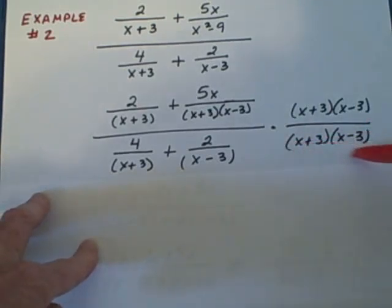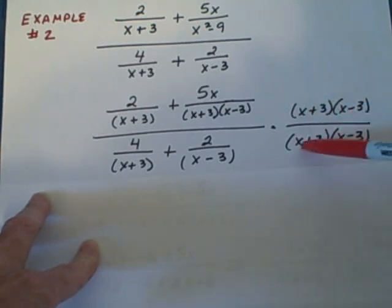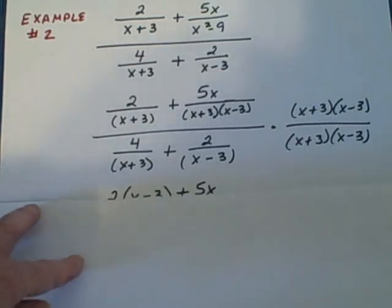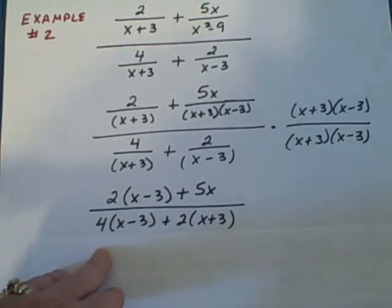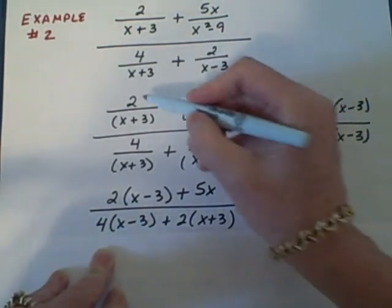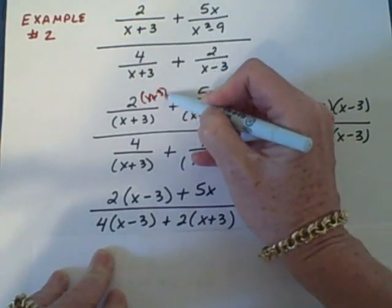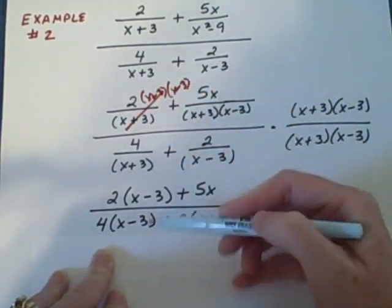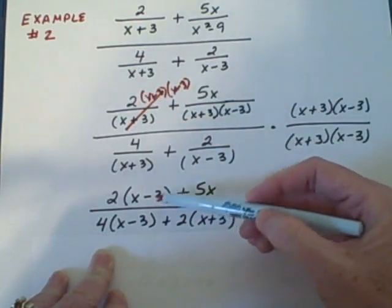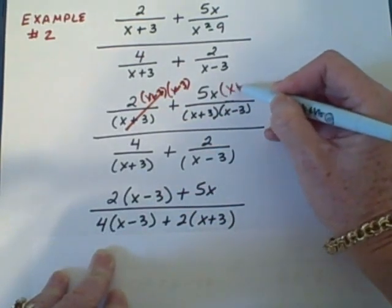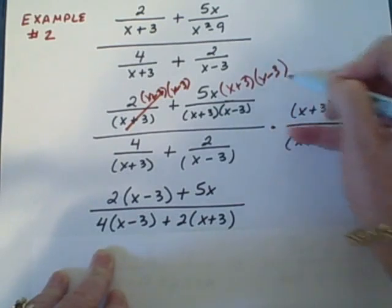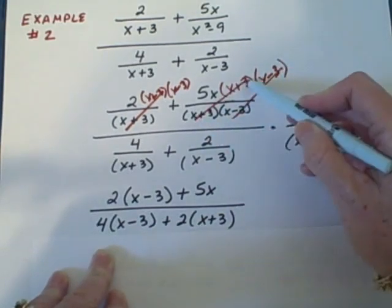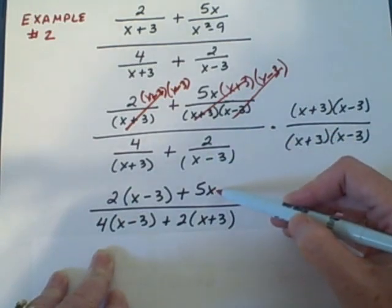Notice we're actually only multiplying by the number 1 because this here is the number 1. Anything over itself is the number 1. So we're not changing the problem, we're just going to make it simpler. Okay so let's go to the next step. Notice when we multiply this by both x plus 3 and x minus 3, the x plus 3 cancel so we're left with 2 times x minus 3. When we multiply this one times x plus 3 times x minus 3 both terms cancel and we're simply left with 2x.